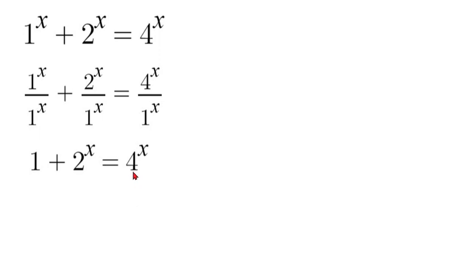So now let's reduce 4 so that it has a base of 2. So we can rewrite 4 as 2 squared. So if we did that our left side would stay the same. Then we now have a 2x.